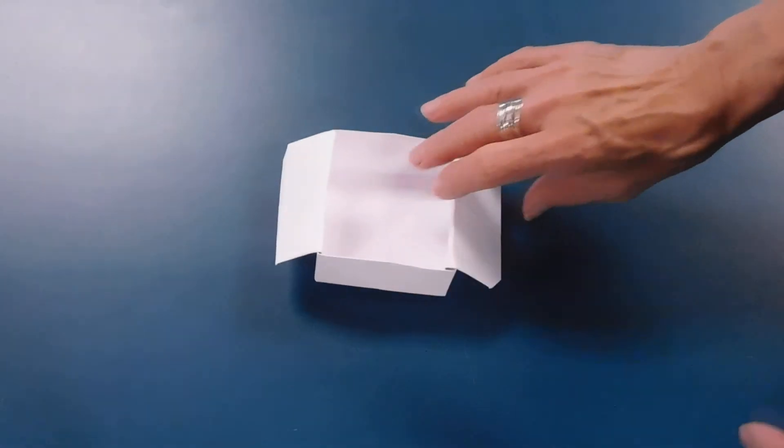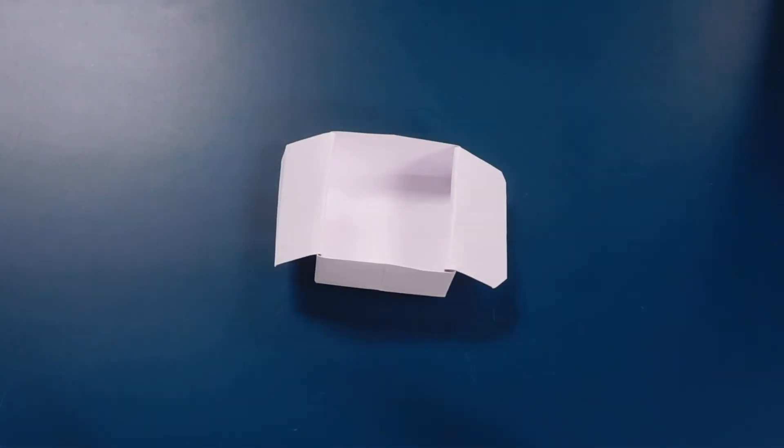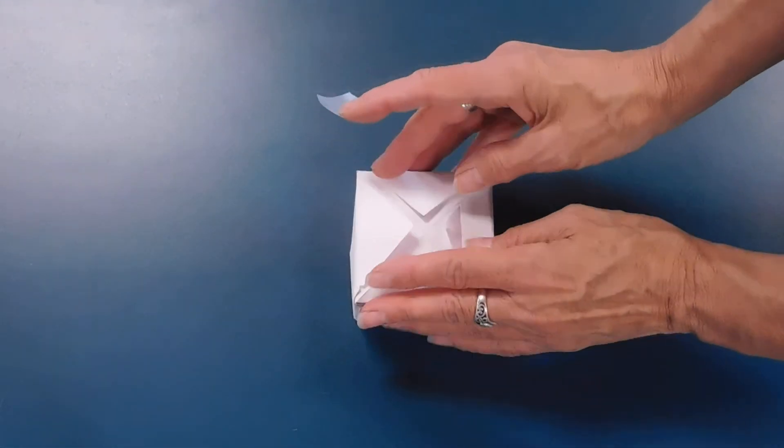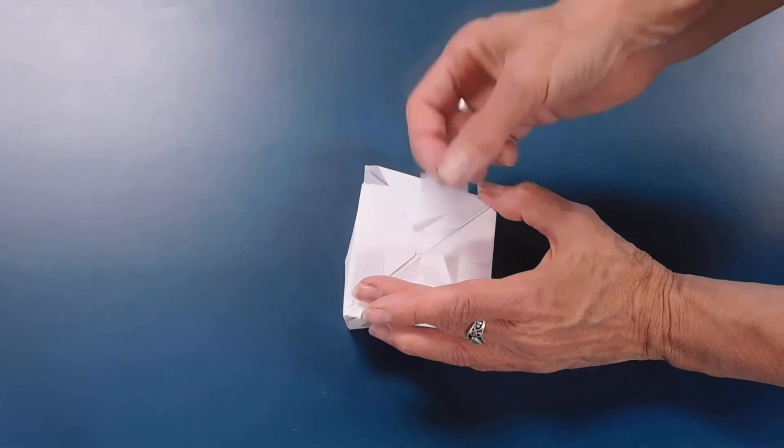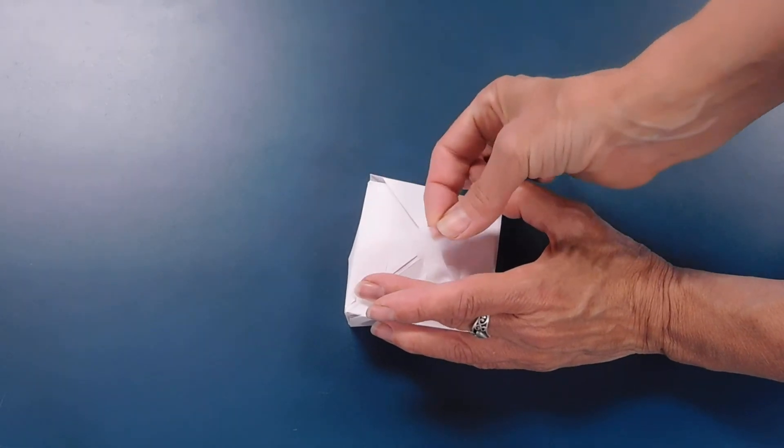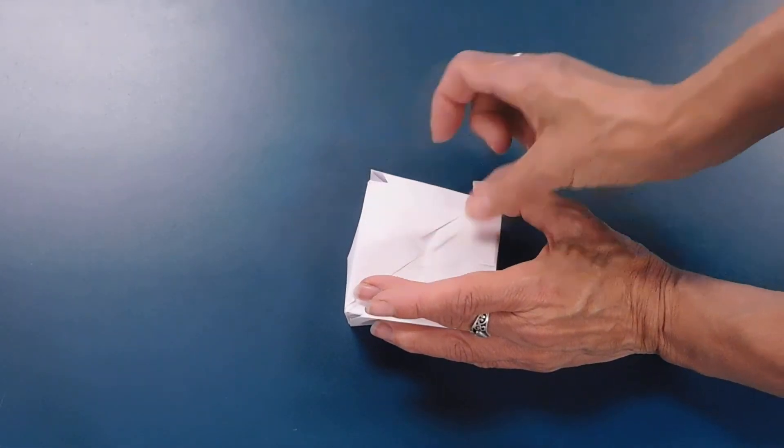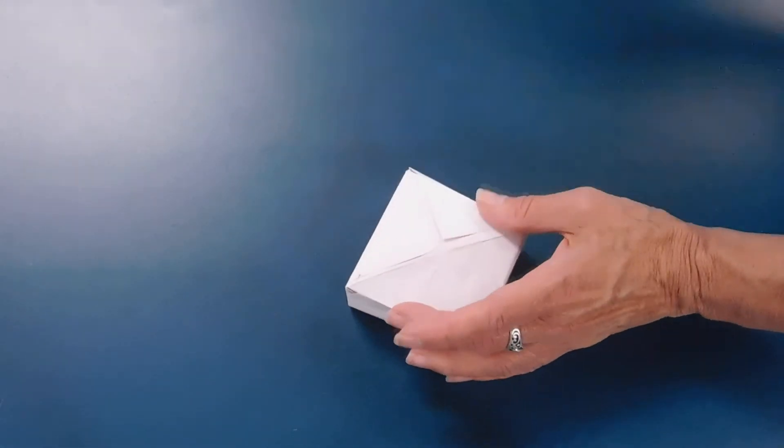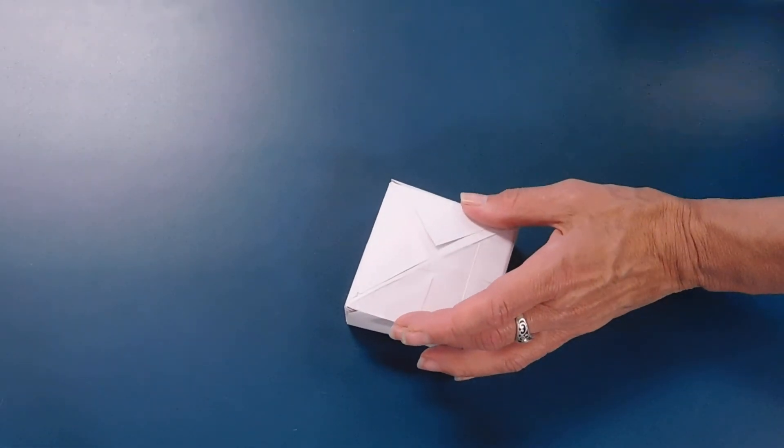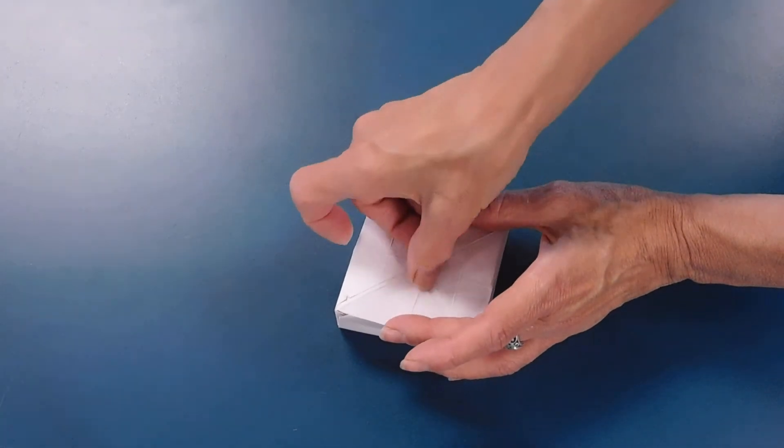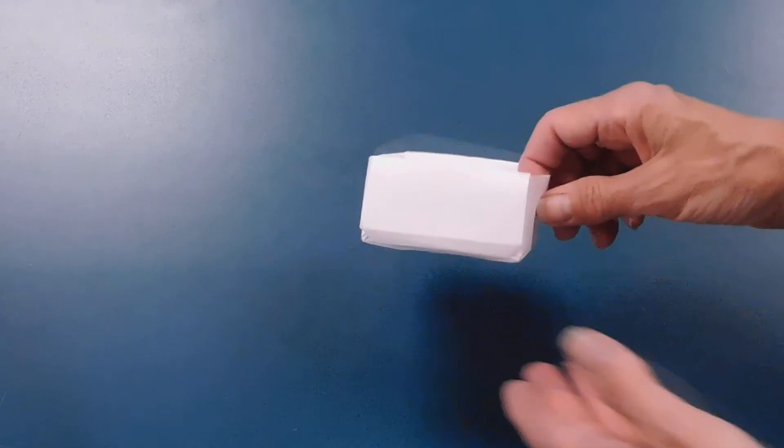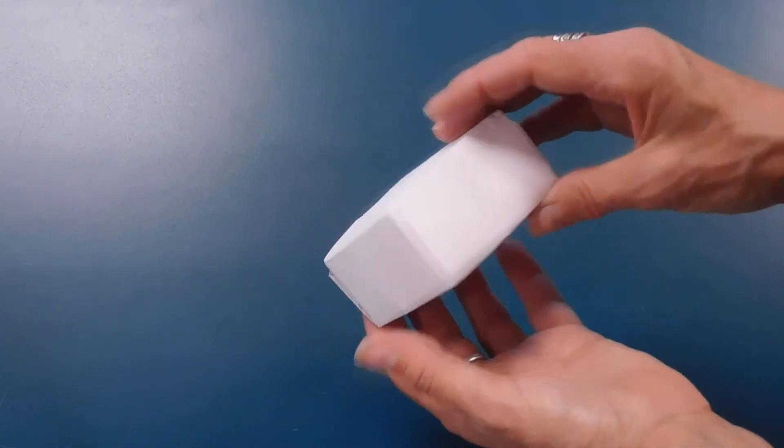So if you want, you can take a small piece of tape, or you can take a sticker or whatever you want. Bring all four of those points together. Just kind of tape those together. And I'm going to do one more piece of tape. So if you had a nice decorative sticker, you could just stick that in the middle. And there is your box.